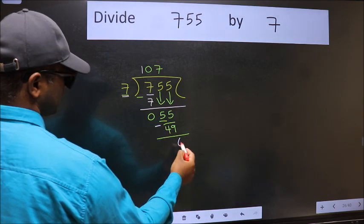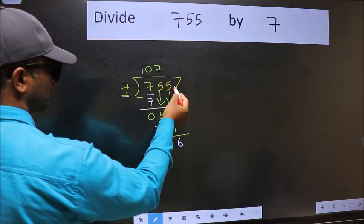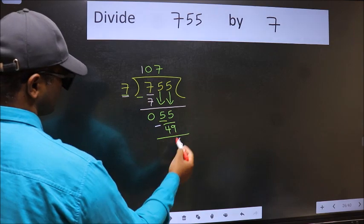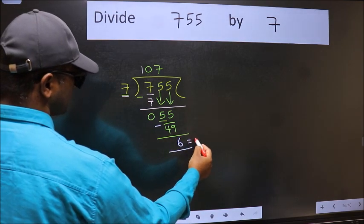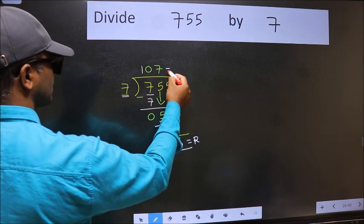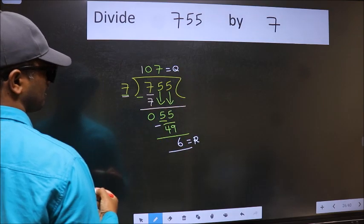No more numbers to bring down, so we stop here. This is our remainder and this is our quotient.